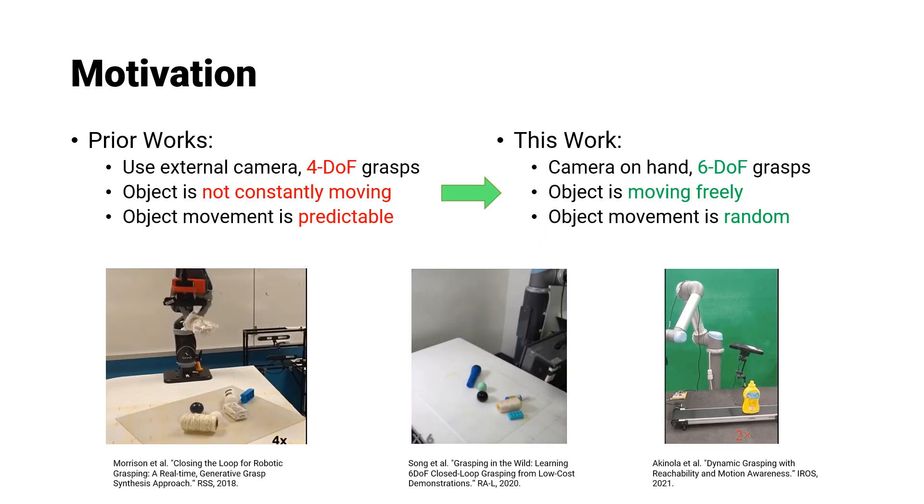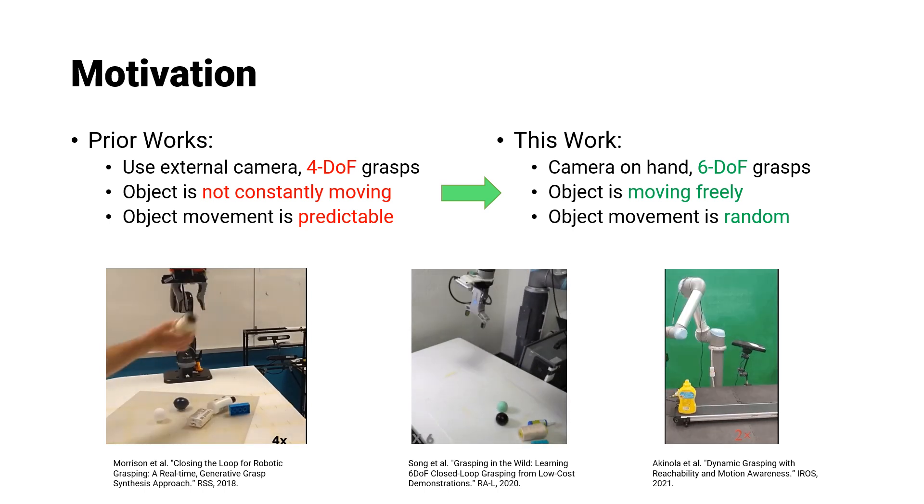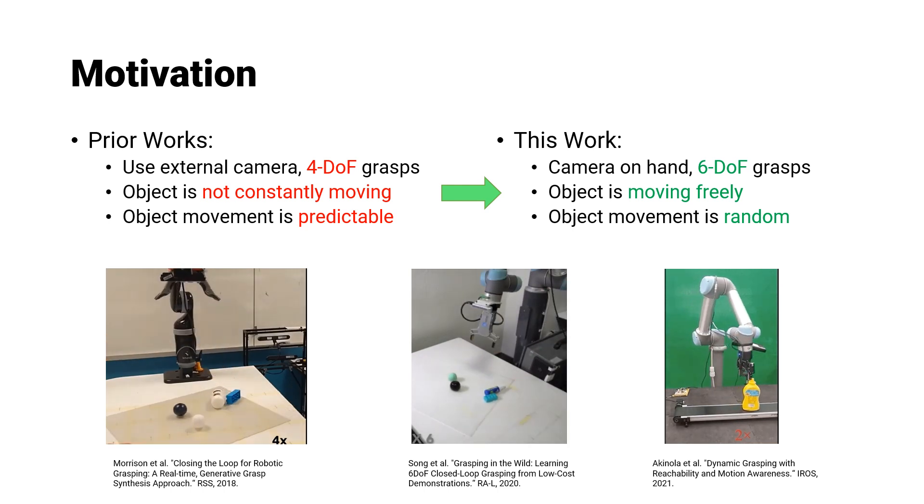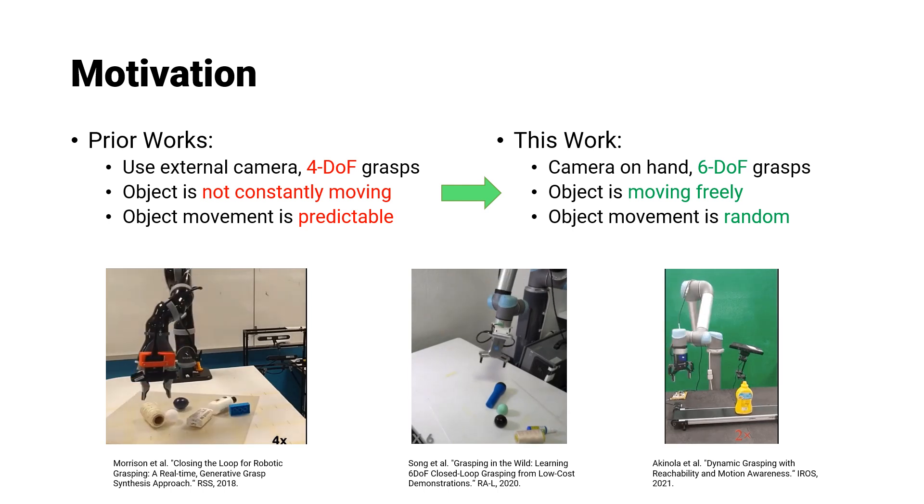Extensive prior research exists on the subject of dynamic grasping, wherein either the environment or the object itself undergoes state changes. Many studies rely on external cameras for perception and are restricted to 4 degree of freedom grasping.